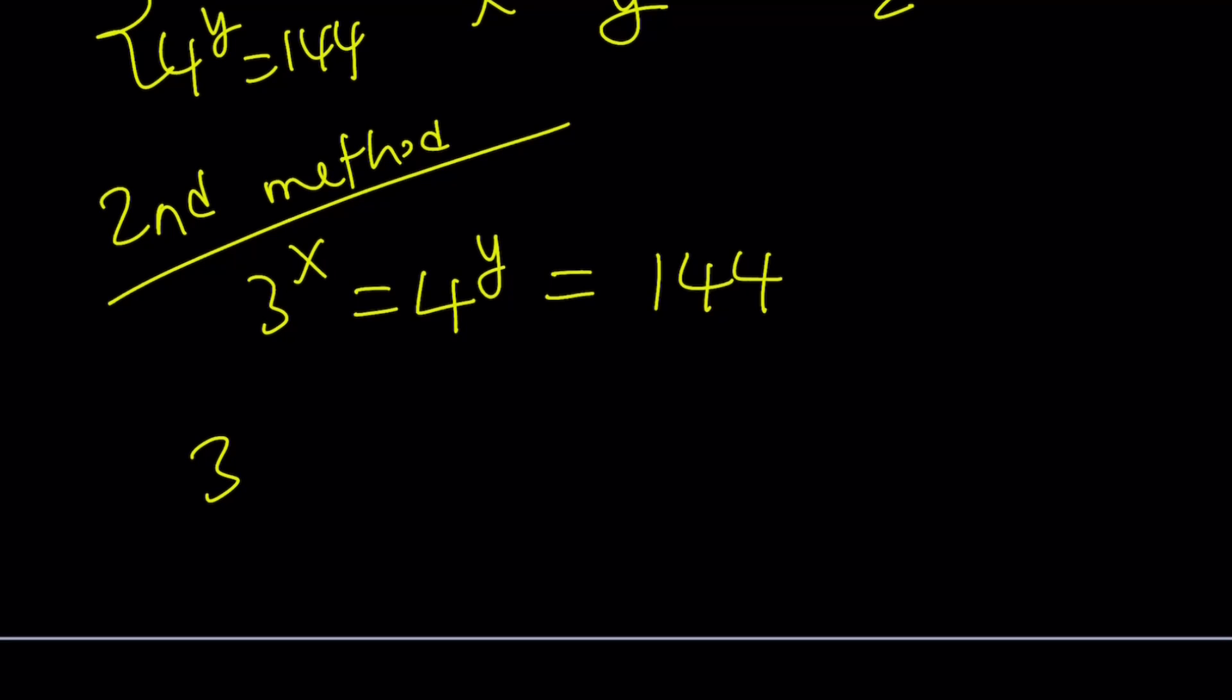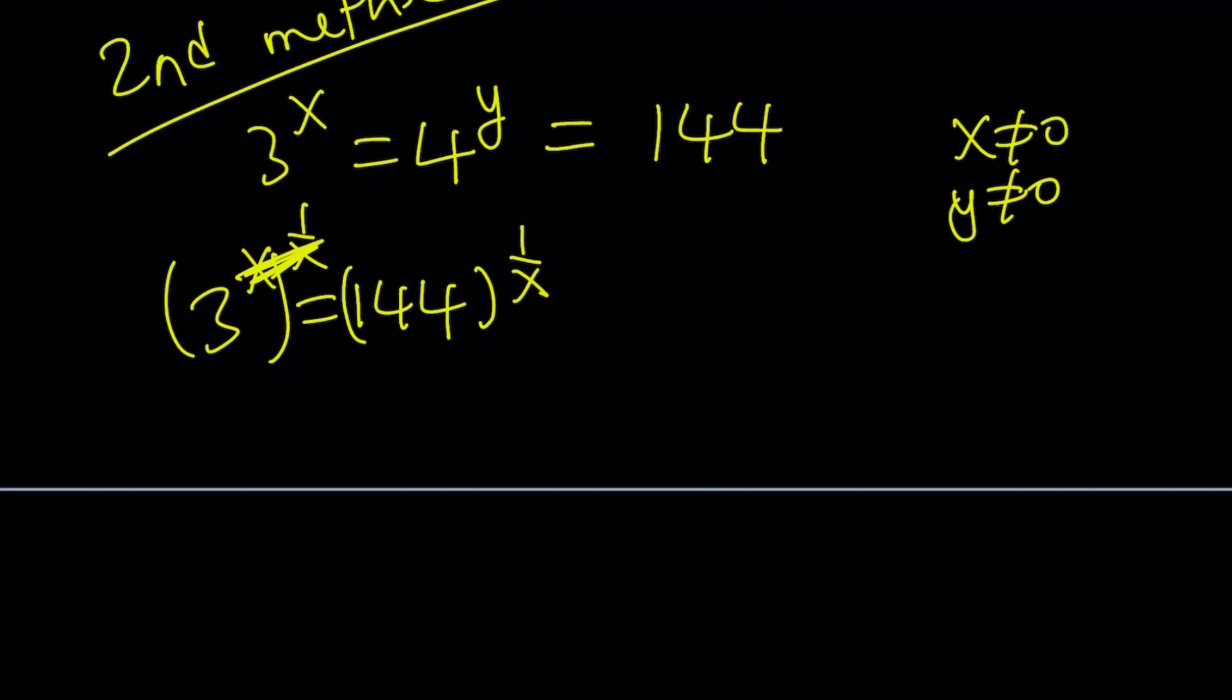How? Well, I'm given that 3 to the x equals 144. So from here, we can raise both sides to the power 1 over x. But why am I doing it? Well, there's a reason because I want to get something good from here. So the x cancels out. Obviously, x does not equal 0. Y does not equal 0. So from here, we get the following: 144 to the power 1 over x equals 3.